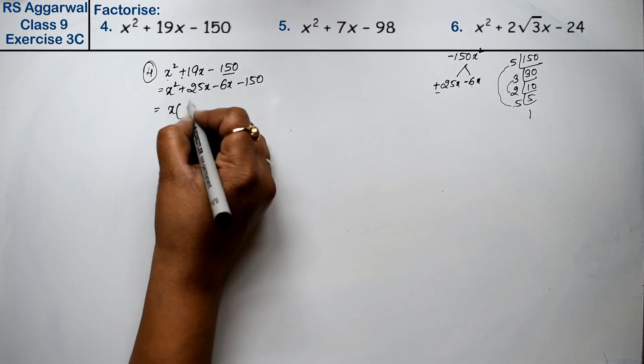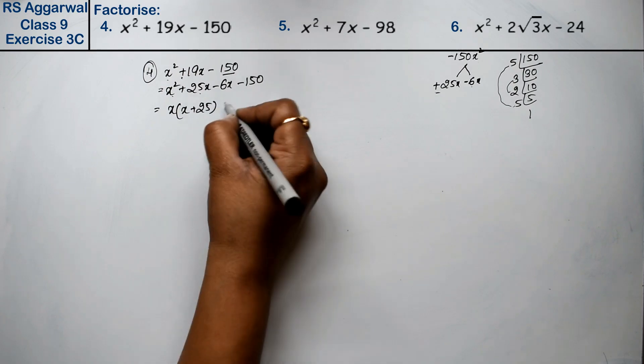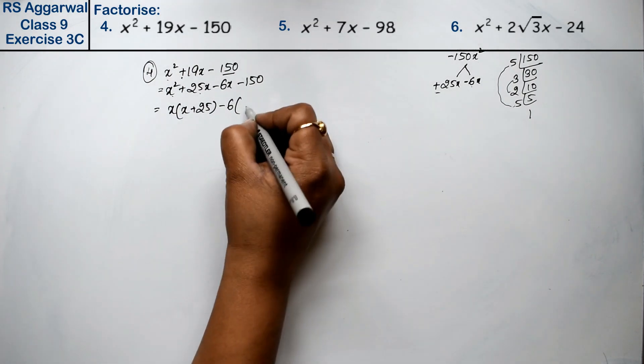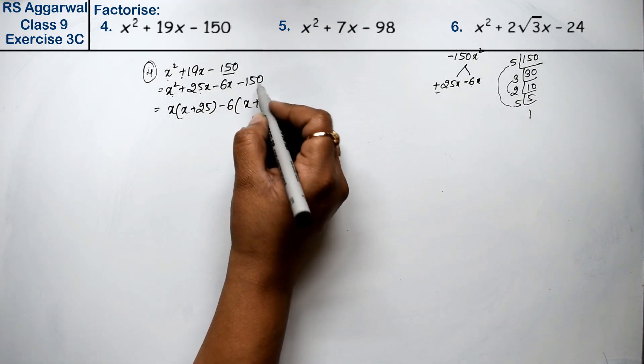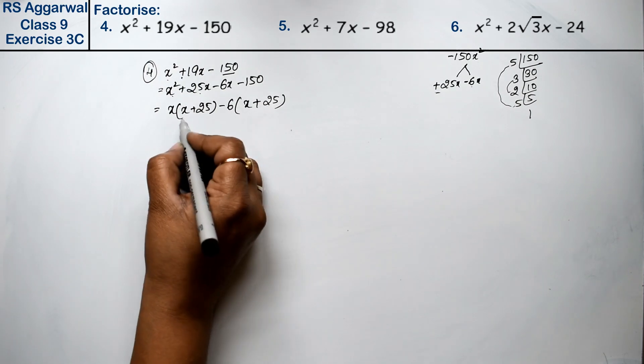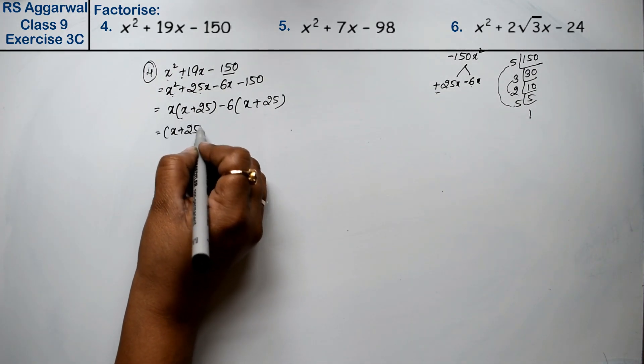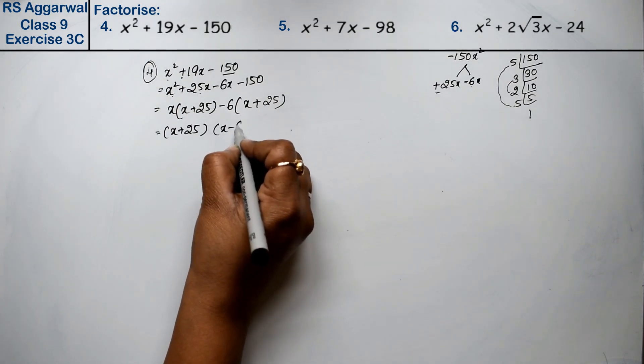What is this? x is common with these two: x plus 25. These two have minus 6 common, so x plus 25. We divide 6 from 150. These two are the same, so x plus 25 is common. The answer is x minus 6.